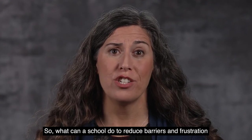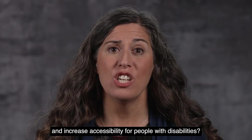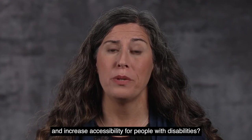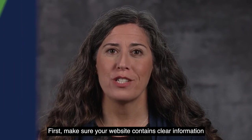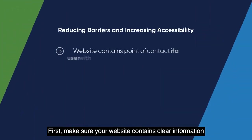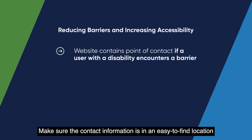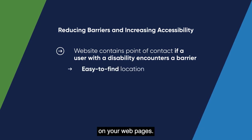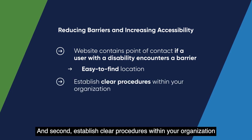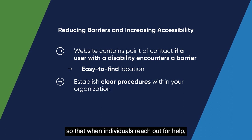So what can a school do to reduce barriers and frustration and increase accessibility for people with disabilities? First, make sure your website contains clear information on whom to contact if a user with a disability encounters a barrier. Make sure the contact information is in an easy-to-find location on your web pages.